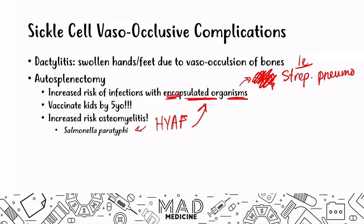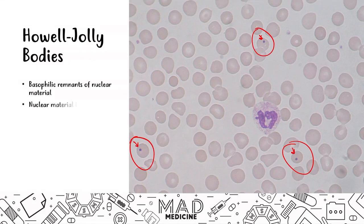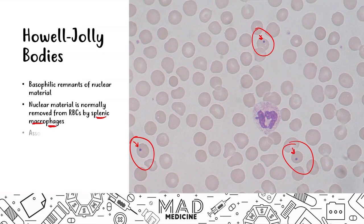Because of autosplenectomy and loss of functioning spleen, you will see Howell-Jolly bodies on the blood smear. These are basophilic remnants of nuclear material that are normally removed from RBCs by splenic macrophages. Without a functioning spleen, the macrophages cannot remove this nuclear remnant. Howell-Jolly bodies are associated with sickle cell disease, asplenia, and functional hyposplenia.